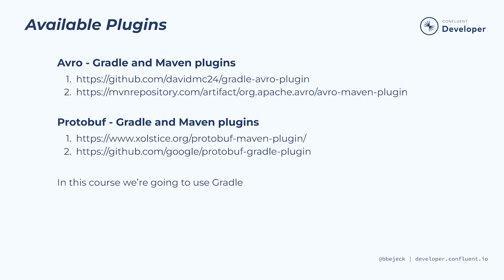Once you've written your schema files, you'll want to generate the model data objects from the schema files. Fortunately, there are plugins available that you can integrate into your local build with either Maven or Gradle. In this course, we're going to work with Gradle. In the upcoming exercise, you'll configure a build.gradle file to use Avro and protobuf. Before we move on, we should note that schema registry supports JSON schema as well, but that's more of a specification, while Avro and protobuf are full serialization platforms. As a result, the tooling is much better for these two versus JSON schema.